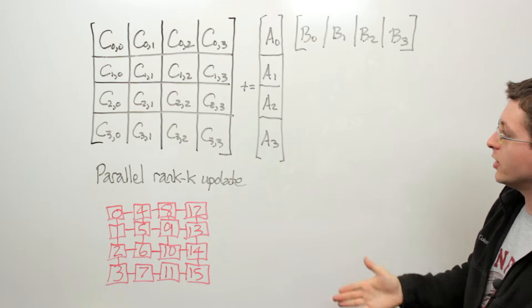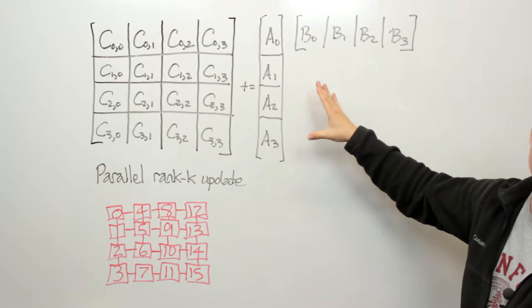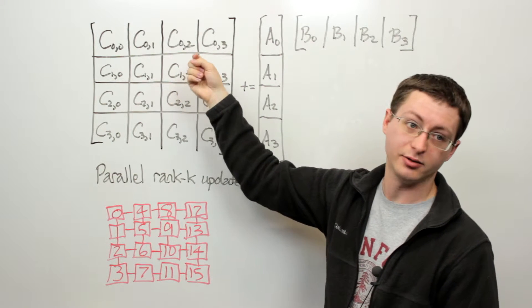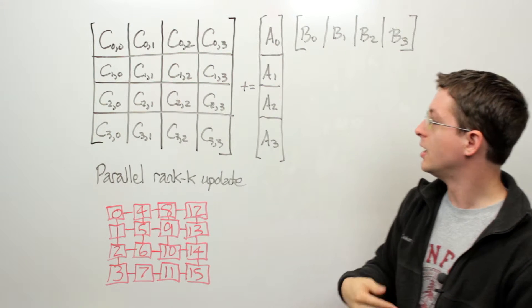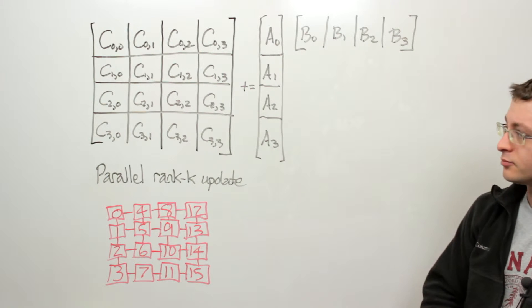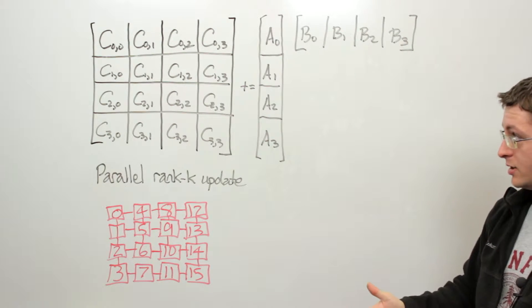So it should be fairly obvious that if the way we've partitioned things, if we want to update the ij block of C then we need to add AI multiplied by BJ to that block.